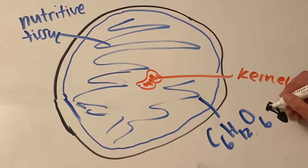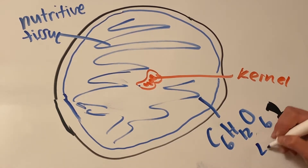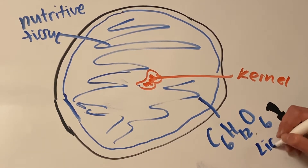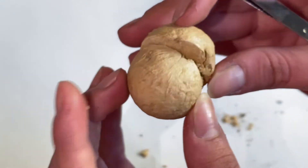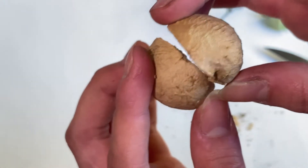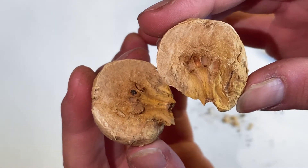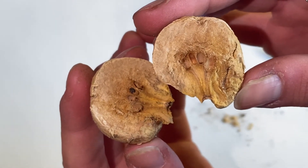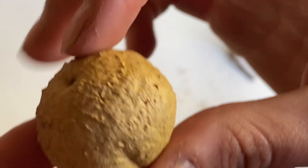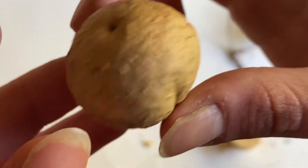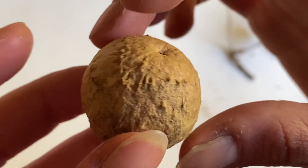However, as the gall ages, that sugar is replaced with lignin — the hard, organic polymer that makes up wood. Because of this high concentration of lignin, the gall becomes tougher, making it even harder for predators to slice their way through. The last line of defense is its outermost layer: a hard crust made of noxious chemicals that will turn most predators away at the door.